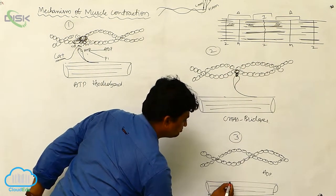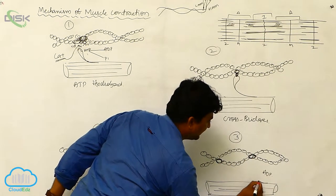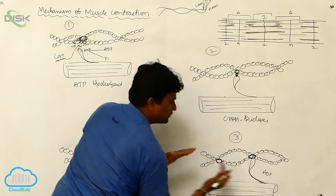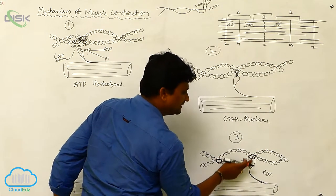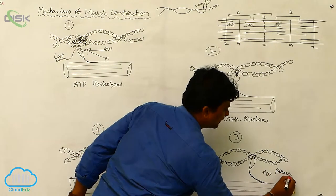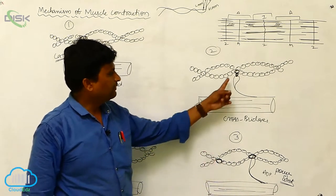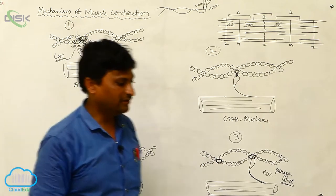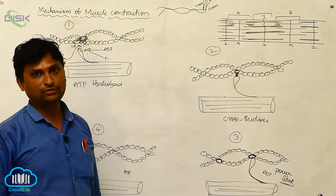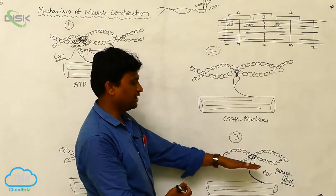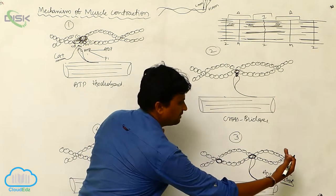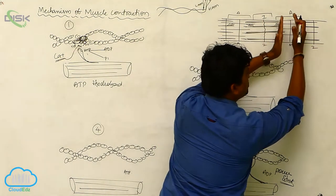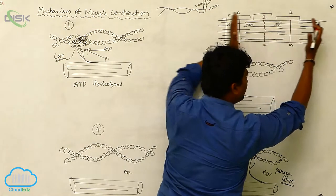The myosin head attaches to the active sites of actin and the contraction occurs. One filament slides over another filament — this stroke is called the power stroke. This is the basis of the sliding filament theory, explained by scientists Huxley and Hansen. The two Z-lines come closer together, shortening the muscle fiber, which is the power stroke.